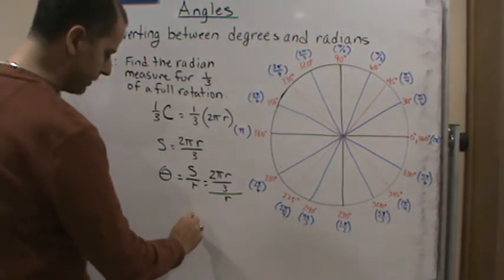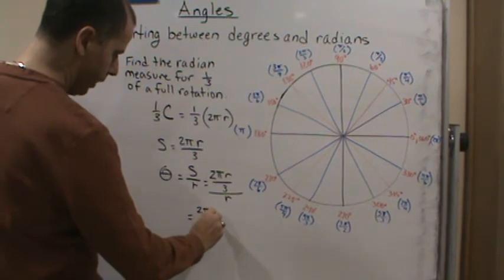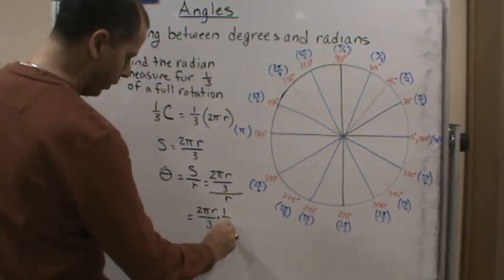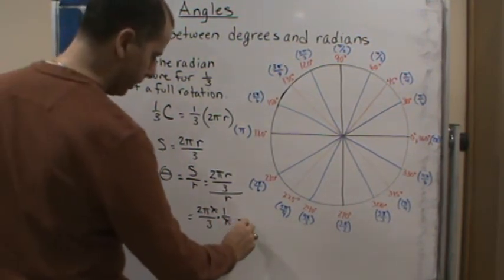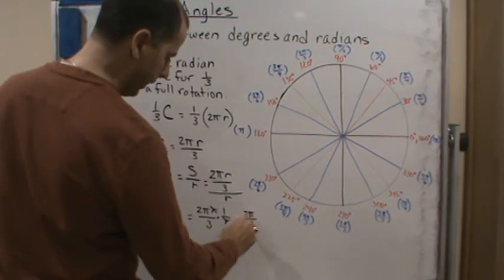Well, if I rewrite this as a multiplication, this gives me 2πr over 3 times 1 over r. The r's cancel, and I get my angle measure which is 2π over 3 radians.